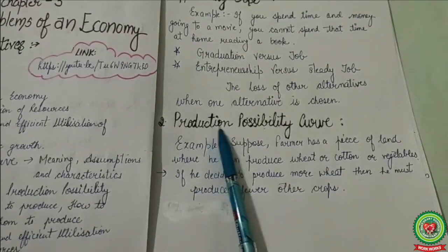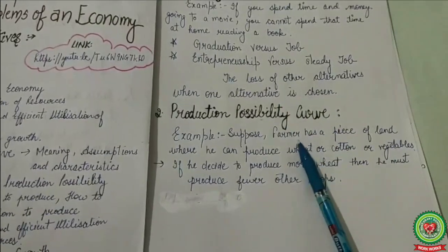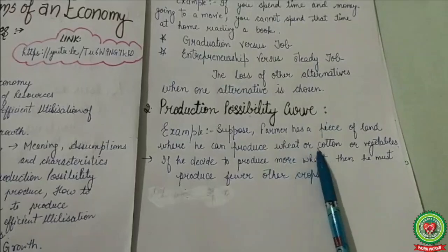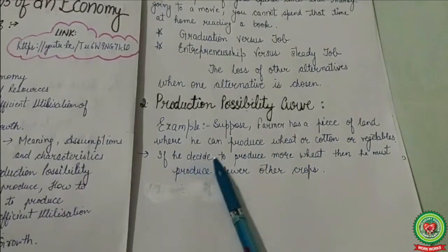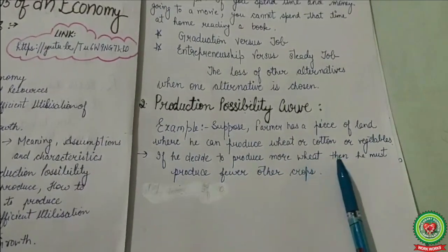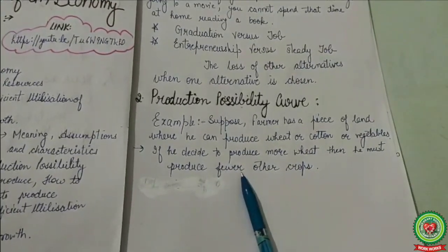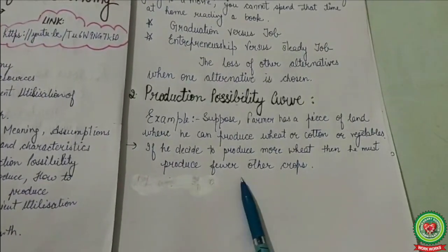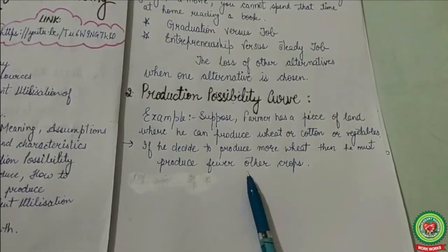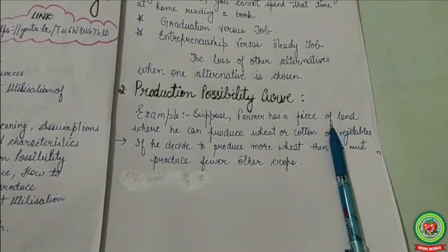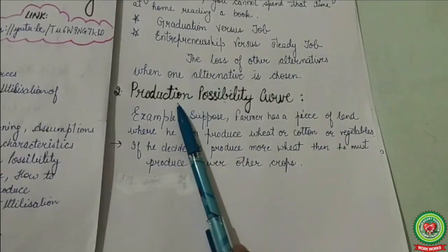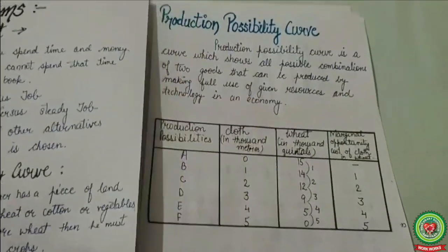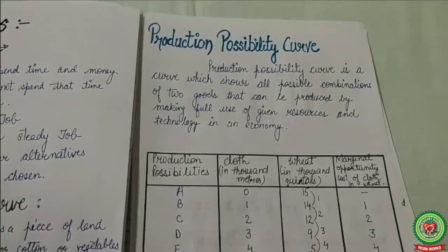Next is the Production Possibility Curve. For example, suppose a farmer has a piece of land where he can produce wheat, cotton, or vegetables. If he decides to produce more wheat, he must produce fewer other crops. That means the production of one commodity would reduce the production of another commodity because the available resources are limited.